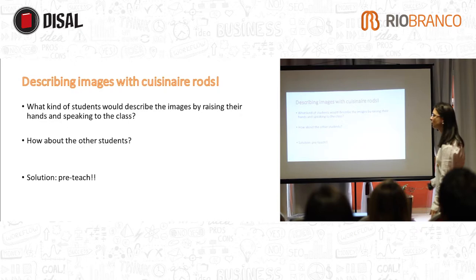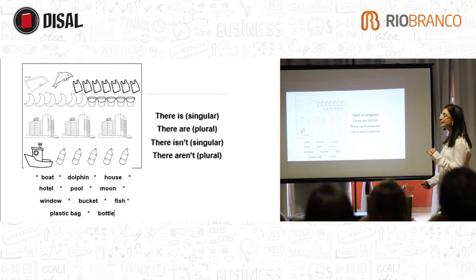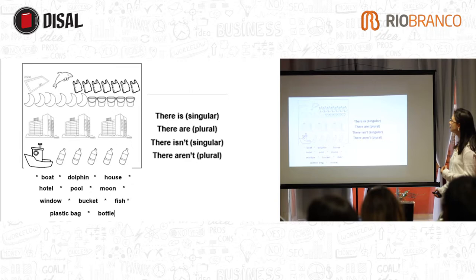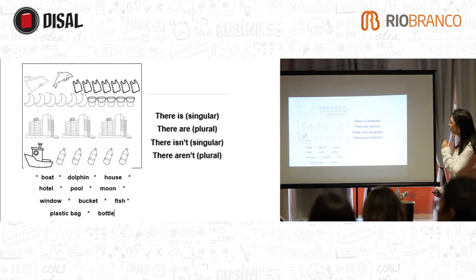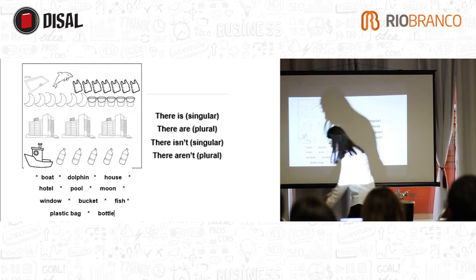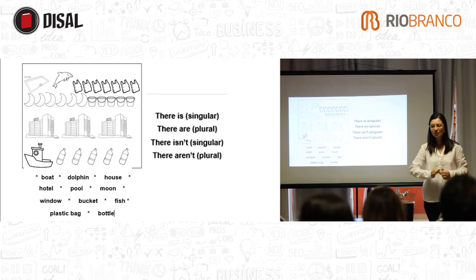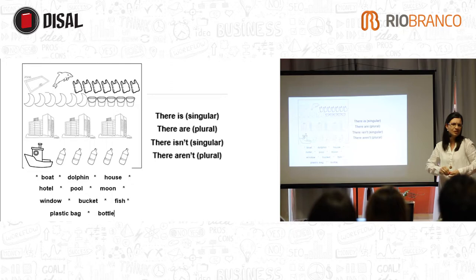Pre-teach. These words are present in the book, and I selected some images: boat, dolphin, house, hotel, pool, moon, window, bucket, fish, plastic bag, and bottle. I'm going to pre-teach them how to describe things before I open the book. Yes, let's not be so hard on them — they're just nine years old.